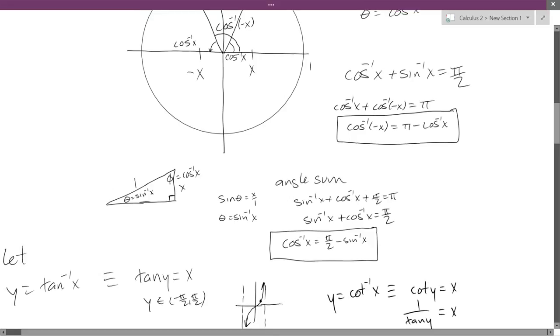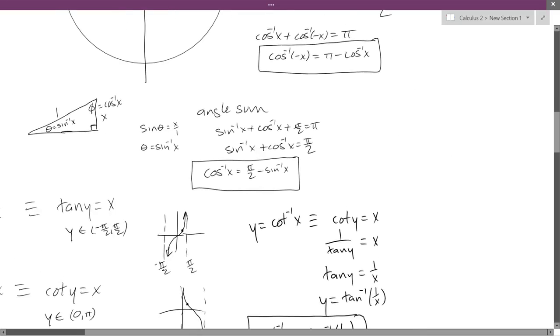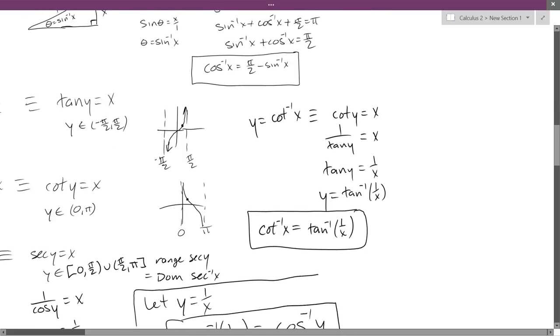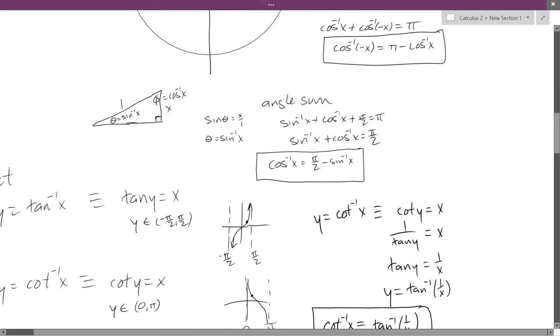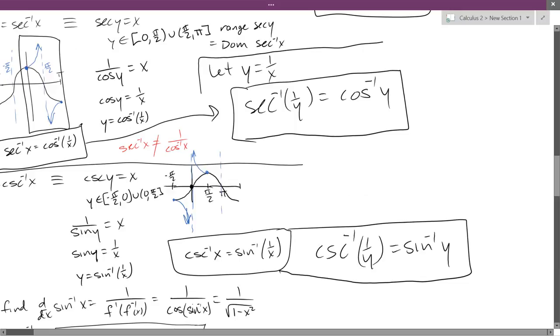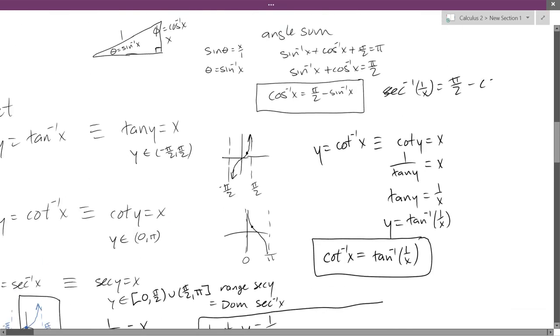Now using both of those right here. So cosine inverse x is secant inverse 1 over x. So we have secant inverse 1 over x equals pi over 2 minus sine inverse. We're going to sub that out for cosecant inverse 1 over x. Then do that same. Let y equal 1 over x and we'll swap these back in. So secant inverse y equals pi over 2 minus cosecant inverse y.